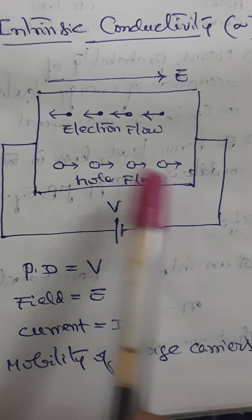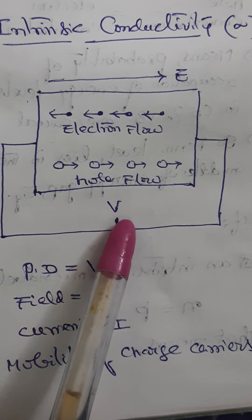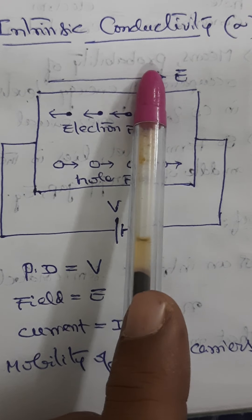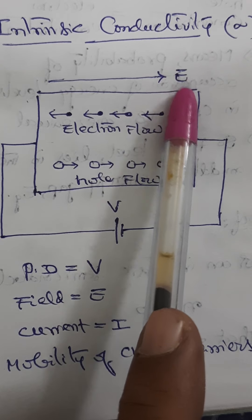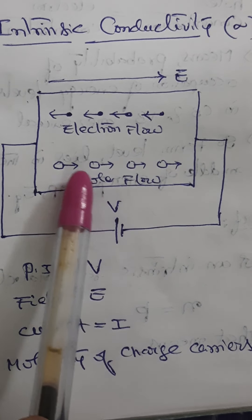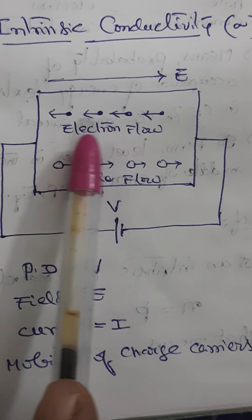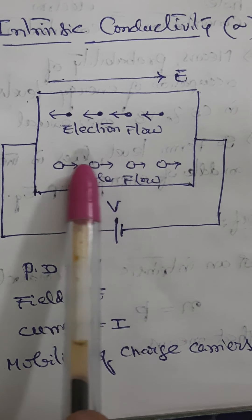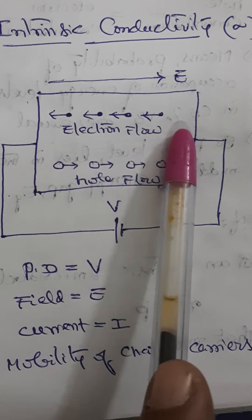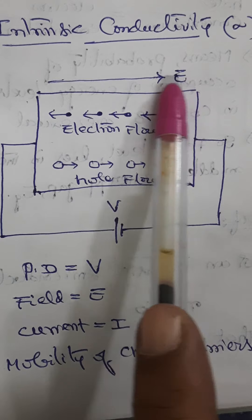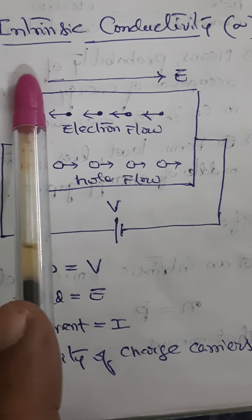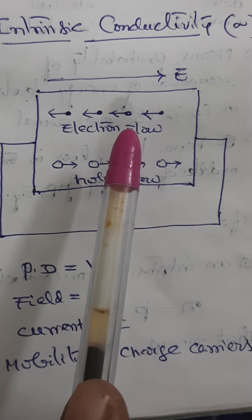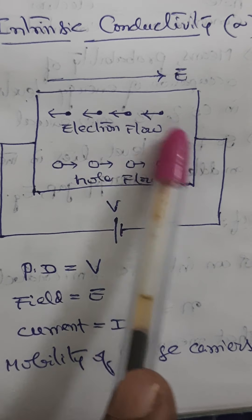We are considering an intrinsic semiconductor to which we have given a potential difference of V. This potential difference establishes an electric field E, which forces the charge carriers to drift in their respective directions. Electrons flow in the direction opposite to the electric field, and holes flow in the direction parallel to the electric field.